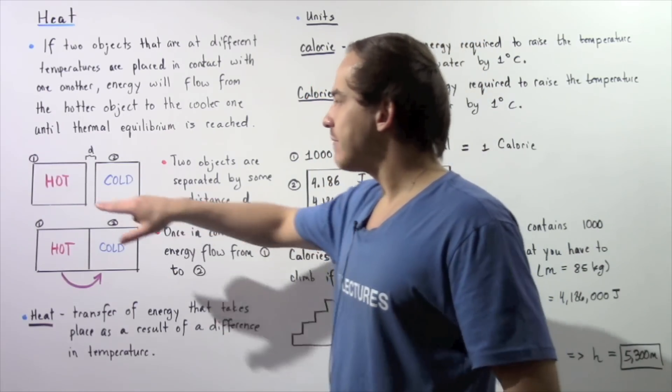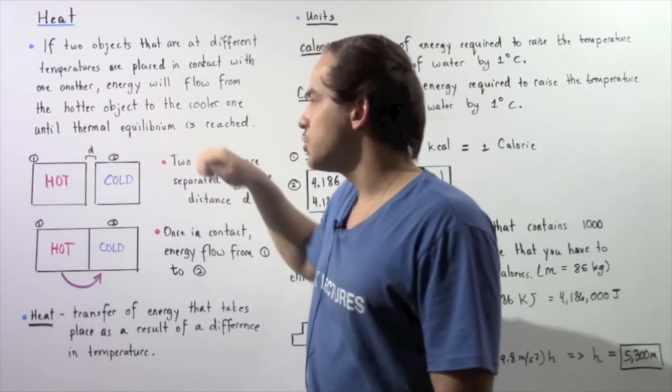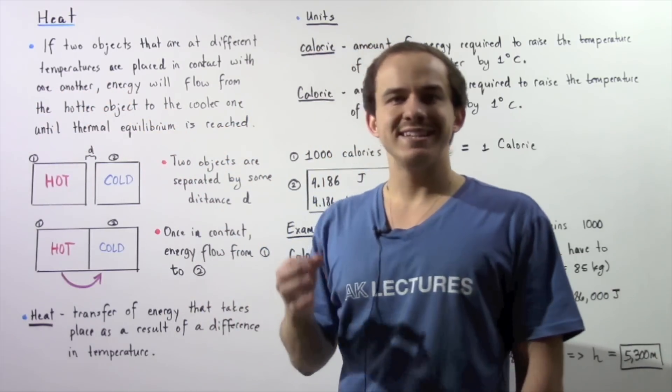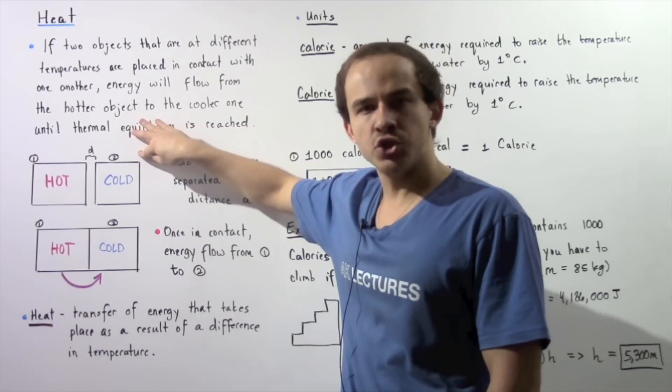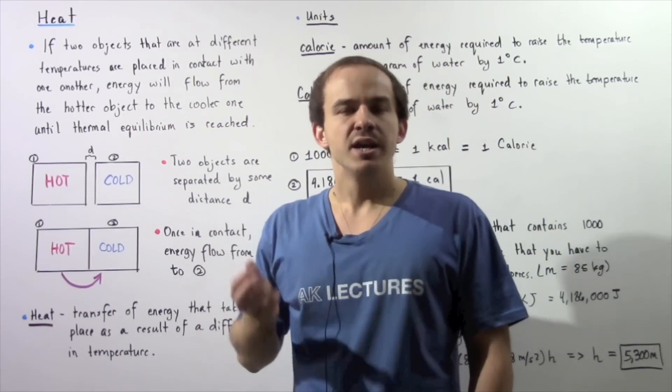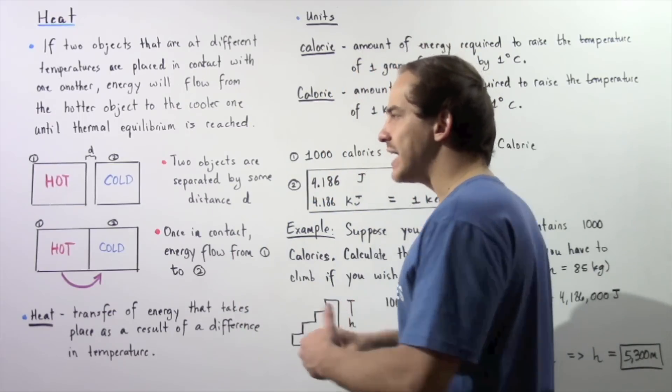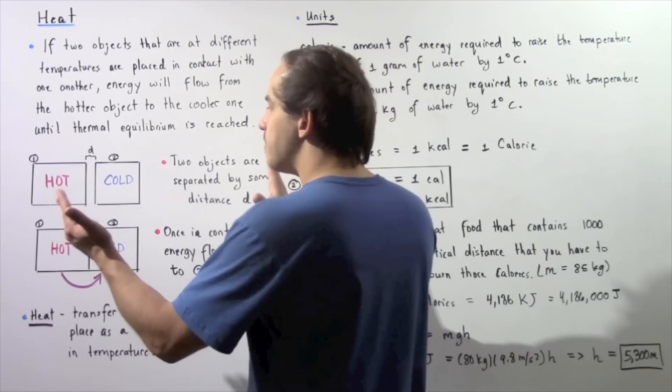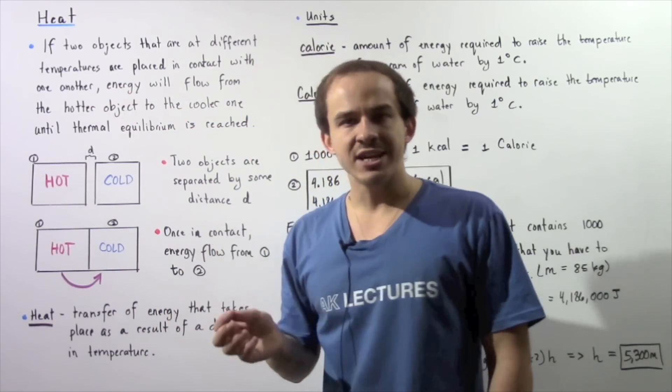So let's suppose we have the following two objects, object number one and object number two. Object number one is initially at a higher temperature than object number two. Initially the two objects are separated by some distance d. Now let's suppose I take my two objects and I bring them in contact, so I decrease my distance to zero.